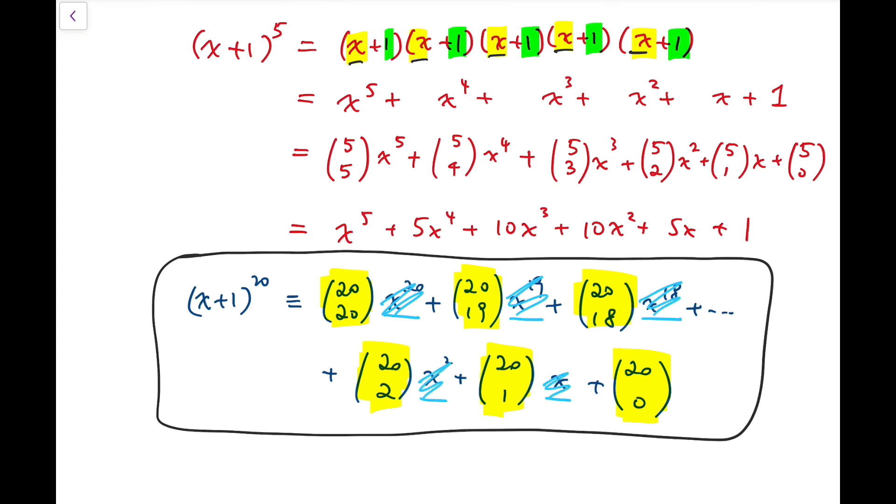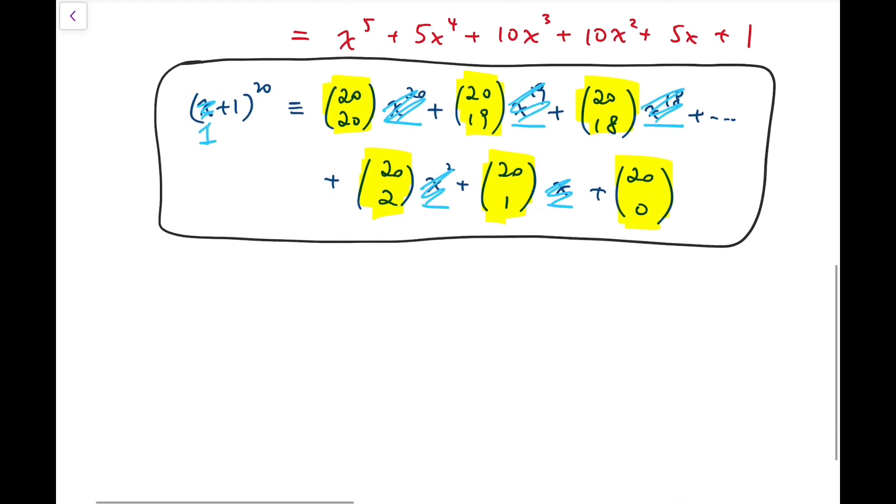And we have the sum of the coefficients, and this number turns out to be 1 plus 1 all to the power 20. So that means our final answer should be 2 to the power 20, and that is equal to 1,048,576. So this is the answer to our problem.